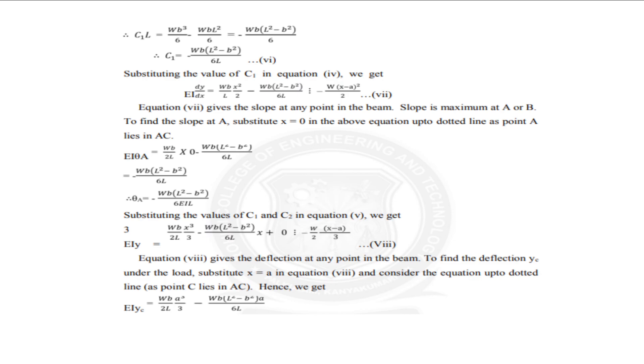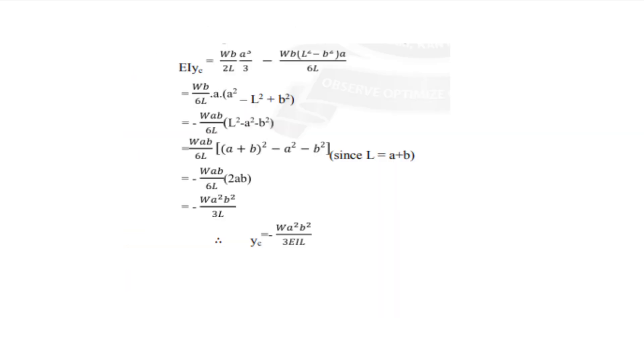To find the deflection YC under the load substitute in equation and consider the equation up to dotted line. Hence we get EI YC equals WB divided by 2L into A square divided by 3 minus WB into L square minus B square into A divided by 6L. So finally we are getting the substituting this we are getting the final equation YC equals minus WA square into B square divided by 3 EI by L. Thank you.